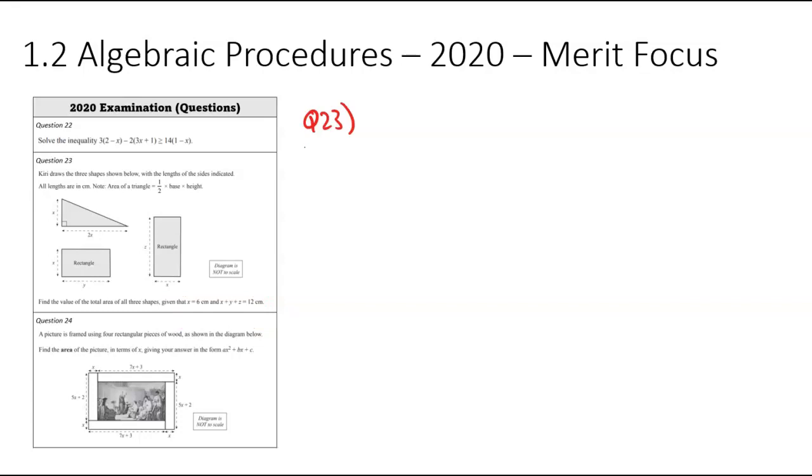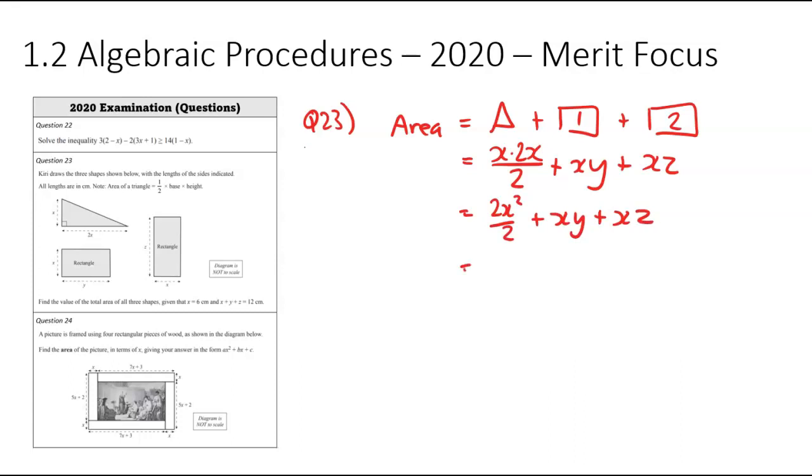So my first step here is I need to come up with an equation representing the total area. So the area is going to be equal to the triangle plus, we'll call that rectangle 1 plus rectangle 2. So the triangle is going to be x times 2x over 2. The first rectangle is going to be base times height which is xy and the second rectangle would be the same thing base times height which would be xz.